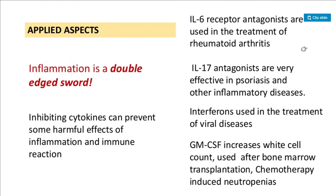In terms of applied aspects, inhibiting cytokines can prevent some harmful effects of inflammation and immune reactions. Interleukin-6 receptor antagonists are used in the treatment of rheumatoid arthritis, and interleukin-17 antagonists are very effective in psoriasis and other inflammatory diseases. The goal is to use antagonist drugs that block the receptor so the interleukin cannot bind and inflammation is reduced.